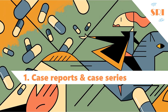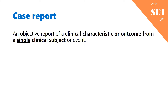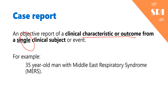First of all, we're going to begin with case reports and case series. A case report is basically an objective report of a clinical characteristic or outcome from a single clinical subject — meaning we are making a report on one patient. For example, a 35-year-old man with Middle East Respiratory Syndrome. As a physician, I might see this patient, find him very interesting, write a report, and publish it so other people can better understand the disease.